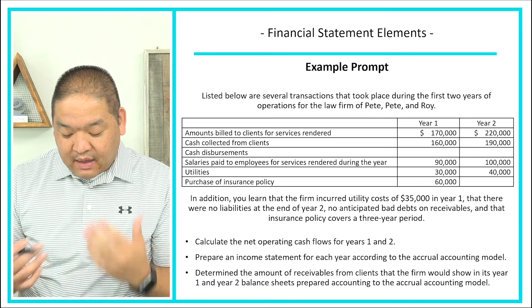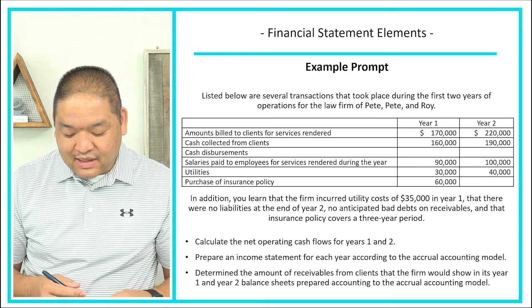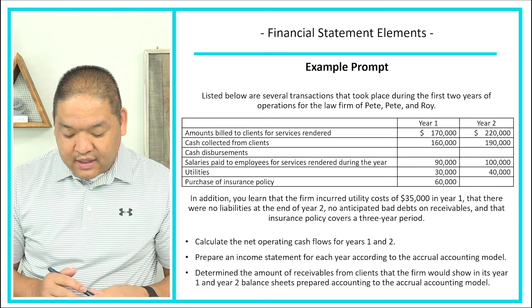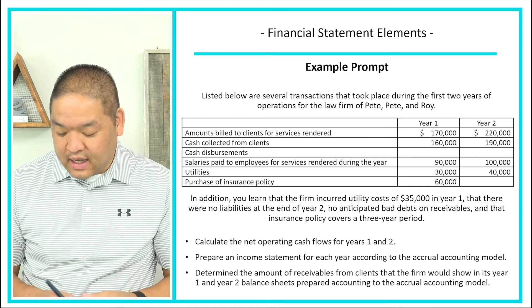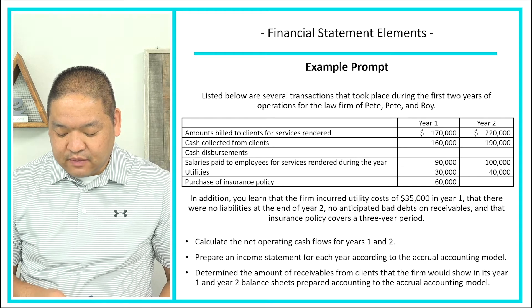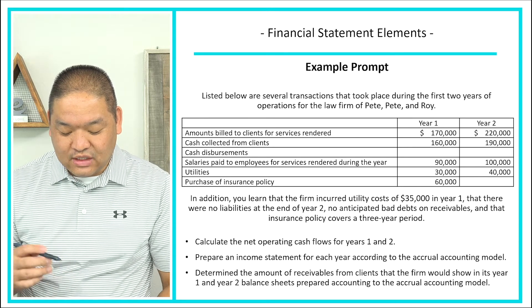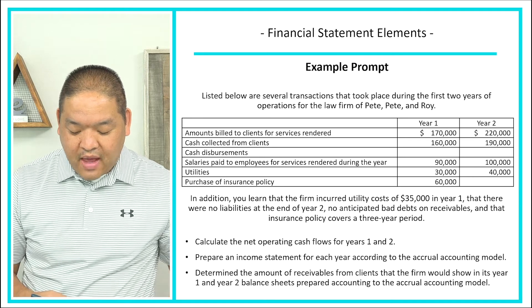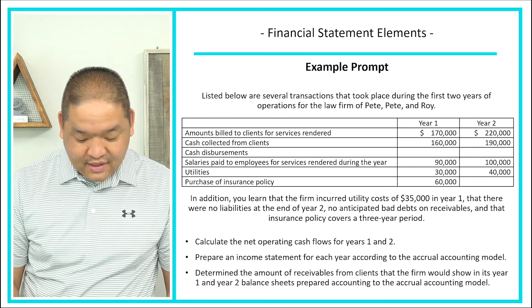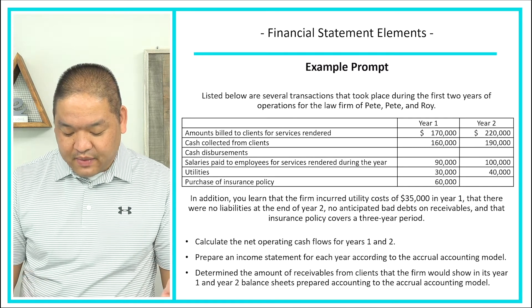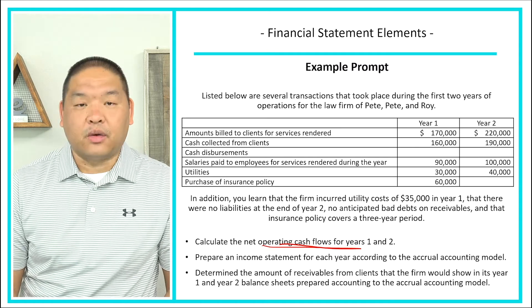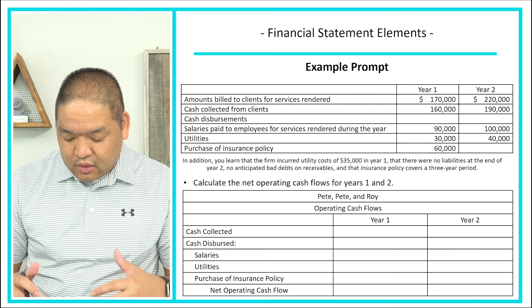The problem asks us to do three things: calculate the net operating cash flows for year one and year two; prepare an income statement for each year according to the accrual accounting method; and determine the amount of receivables from clients that the firm would show in its year one and year two balance sheet under the accrual accounting method. We'll go step by step.